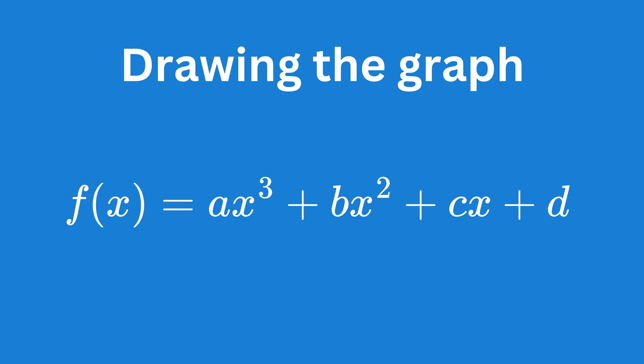A general cubic function is written as a times x cubed plus b times x squared plus cx plus d, where a, b, c, and d are all constants. Cubic graphs can take on various shapes, but they all have the characteristic s-curve shape, which can be more stretched or compressed depending on the coefficients. Let's draw two basic cubic functions to see how they look.